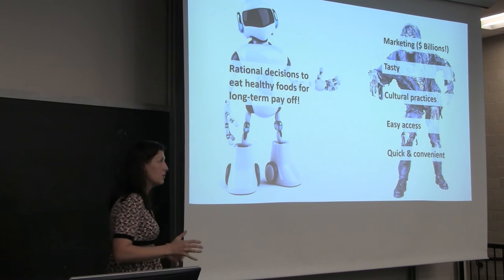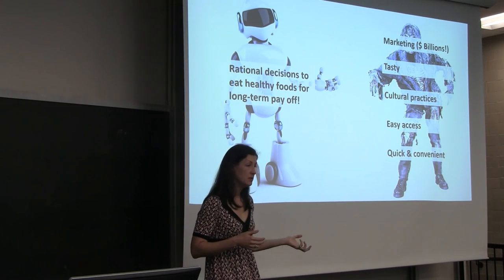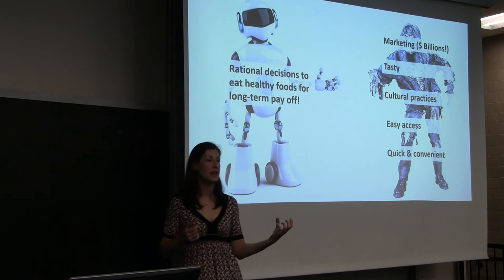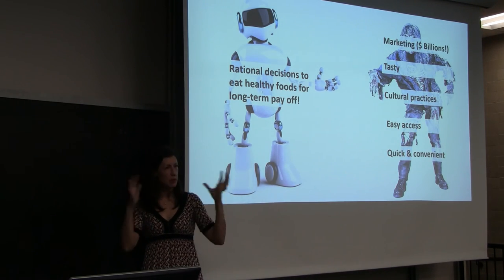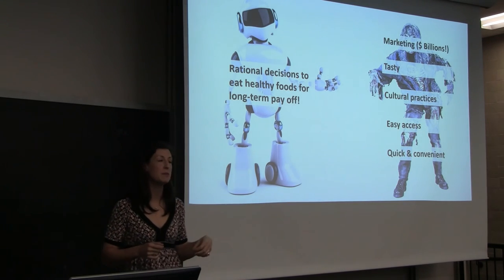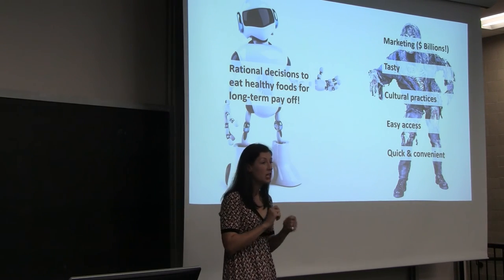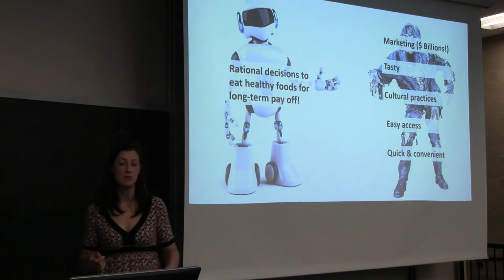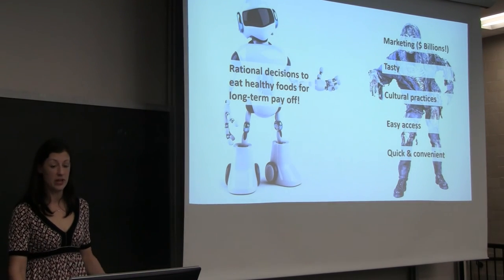What are the cues in the retail food environment? First, there are billions of dollars spent on marketing of typically less healthy foods. When you add salt, fat, and sugar to things, they're tastier. We're biologically designed to seek out sources of salt, sugar, and fat — that's what has helped us evolve over time as a species. Easy access: unhealthy foods are so easy to access, they're everywhere. And they're very quick and convenient compared to, say, eating an apple.